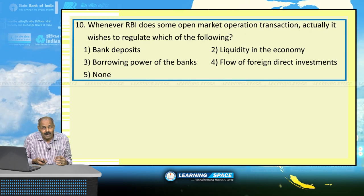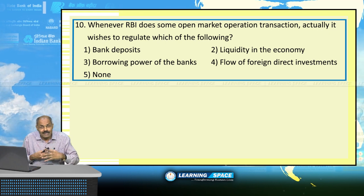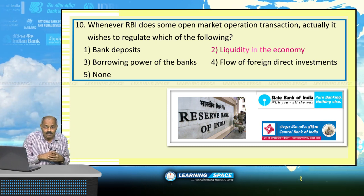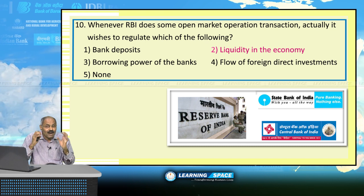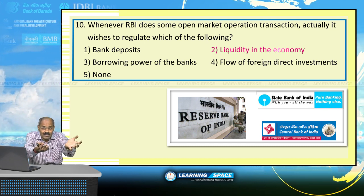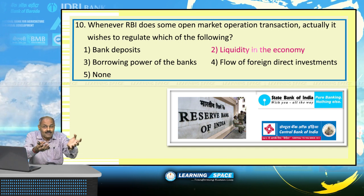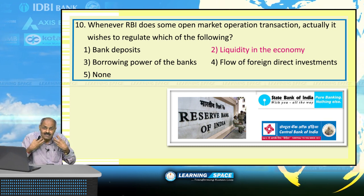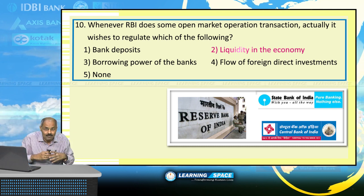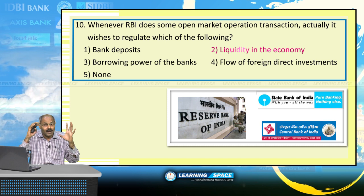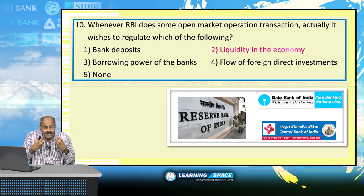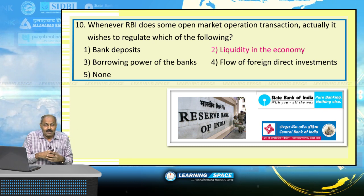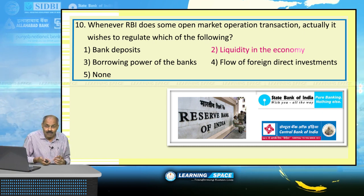Whenever RBI conducts open market operations, it wishes to regulate liquidity in the economy. When RBI feels liquidity is excess, it sucks liquidity by issuing government bonds or securities. If RBI feels there is not enough liquidity, it purchases government securities to infuse liquidity into the system. Open market operations allow RBI to either suck or infuse liquidity depending on the requirement.